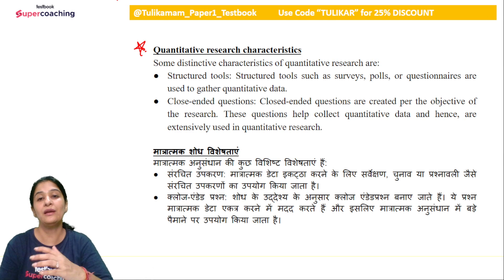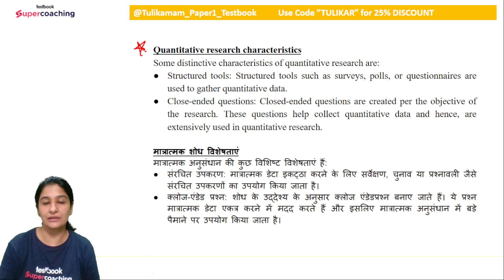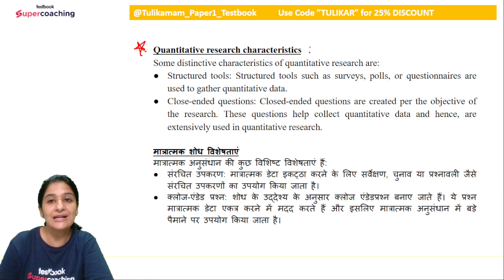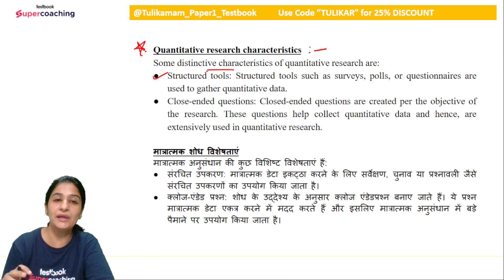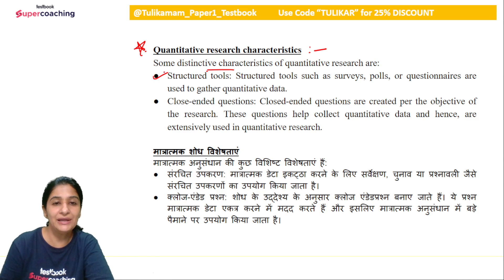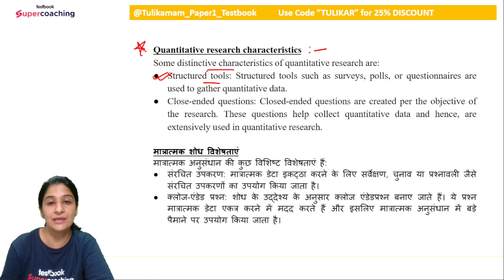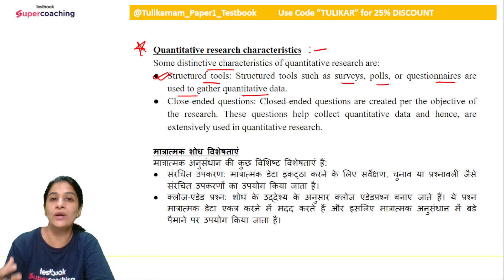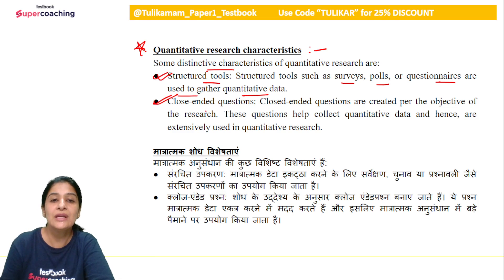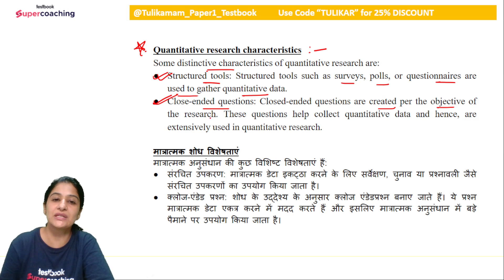Now let's look at some important characteristics of quantitative research. These points can appear in assertion-based or statement-based questions. First: quantitative research uses structured tools. Unlike qualitative research where tools are less structured, in quantitative research the tools — such as surveys, polls, or questionnaires — are designed in a very structured manner to gather quantitative data. Another key characteristic is that questions in the questionnaire are always closed-ended.